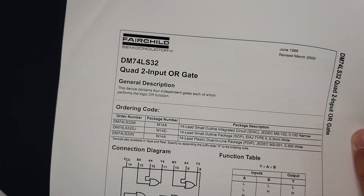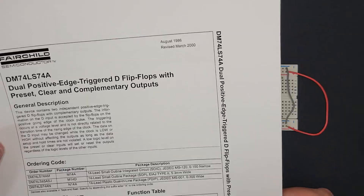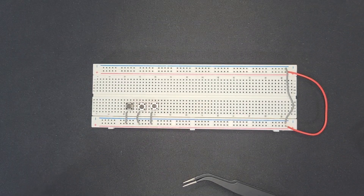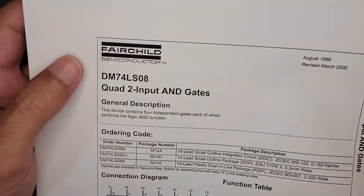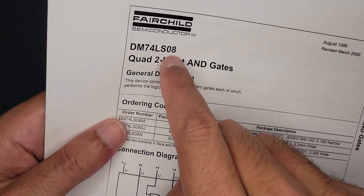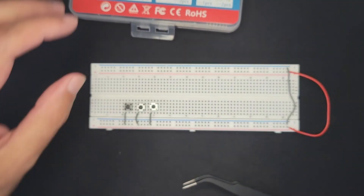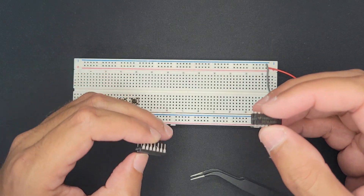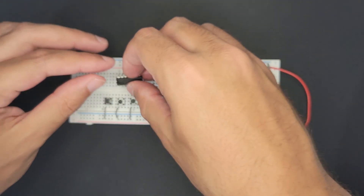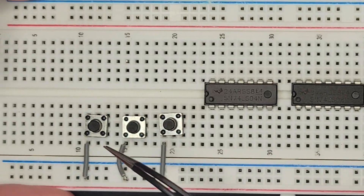Going through the chip options: XOR — don't need that; OR gate — don't need it; NAND gate — no; D flip-flop — no. We need an AND gate and an inverter. The codes are 74LS04 for the inverter and 74LS08 for the AND gate. So we have our AND gate and our inverter. I'm going to place the inverter and the AND gate on the breadboard.